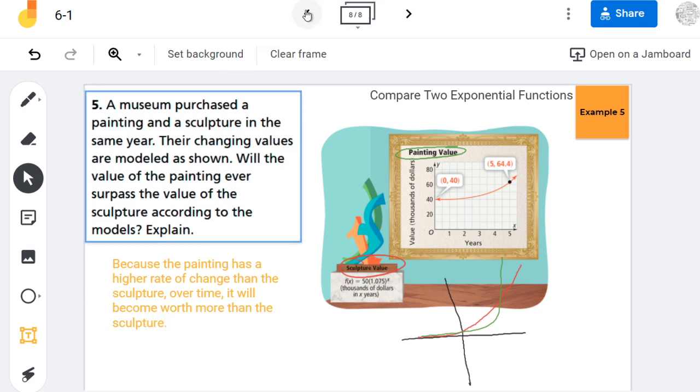But there we have it. If you guys do ever want to find that point, what you would need to do is you would need to find the equation of the painting and put the painting and the sculpture on the same graph and find that point of intersection.